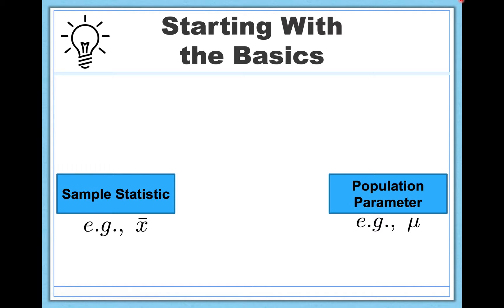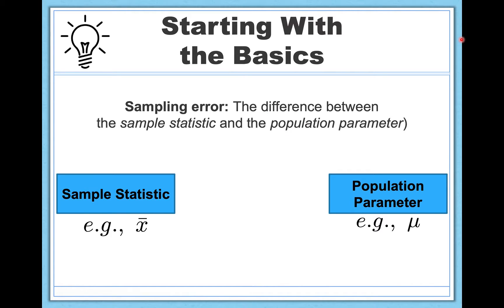Now, we're never going to be quite perfect in this best guess about mu, and this is where sampling error comes in. Sampling error is simply the difference between the sample statistic, in this case x-bar, and the population parameter, mu, that the sample statistic is designed to approximate or to estimate.